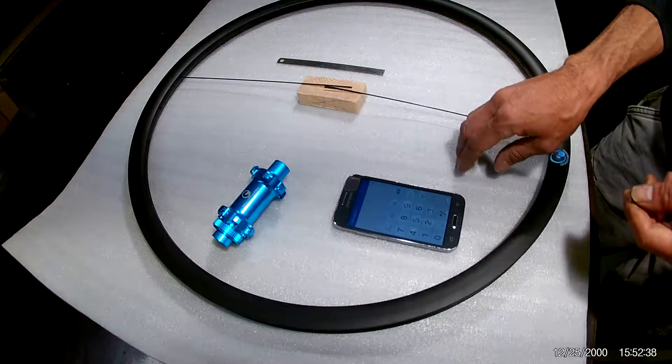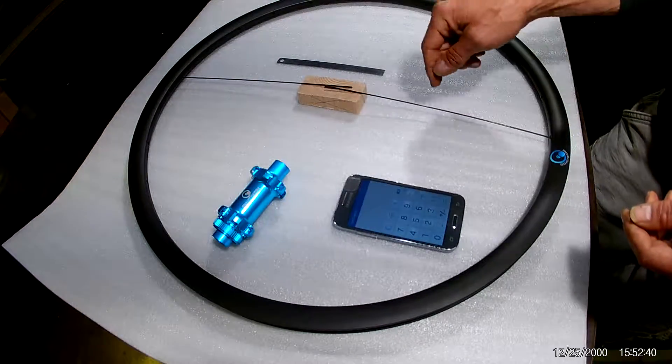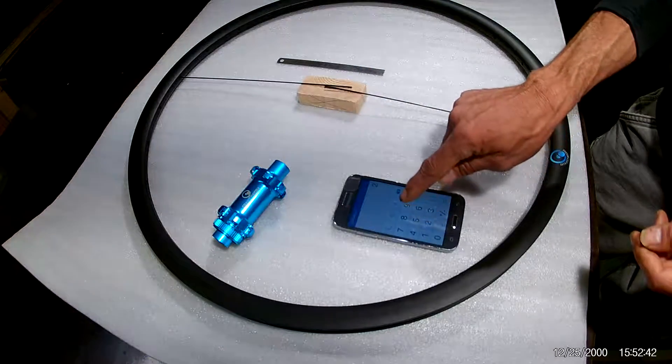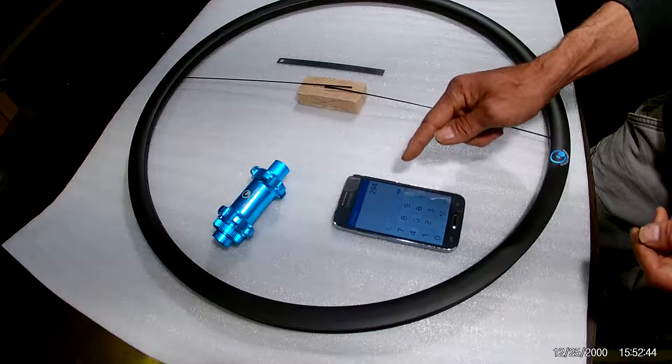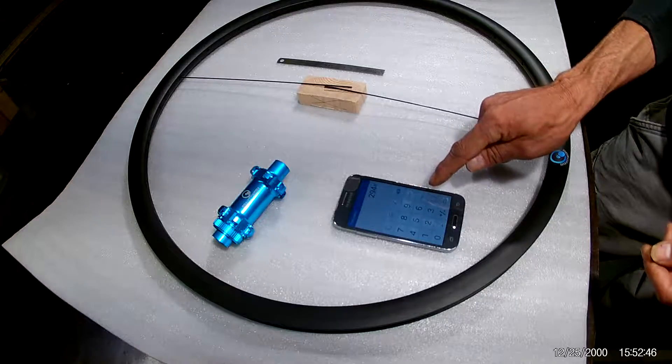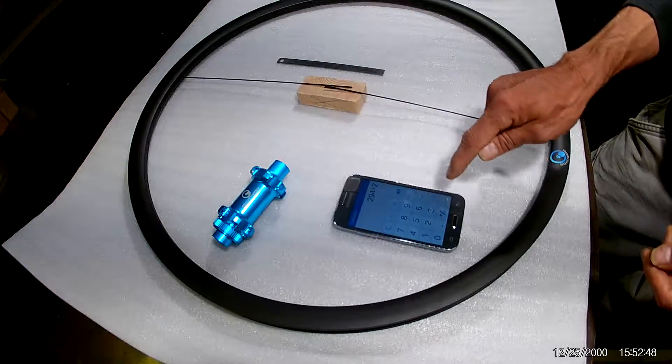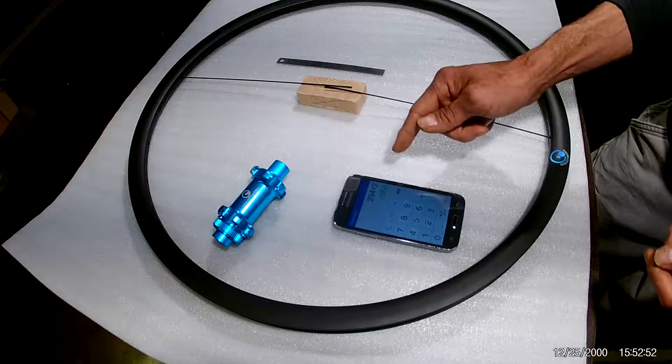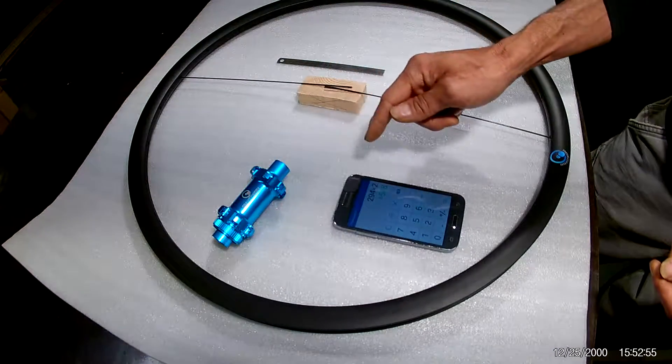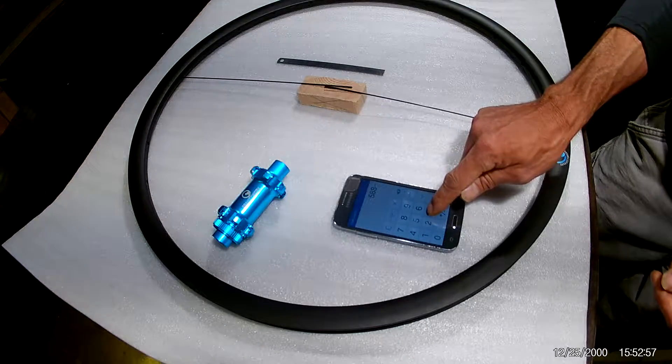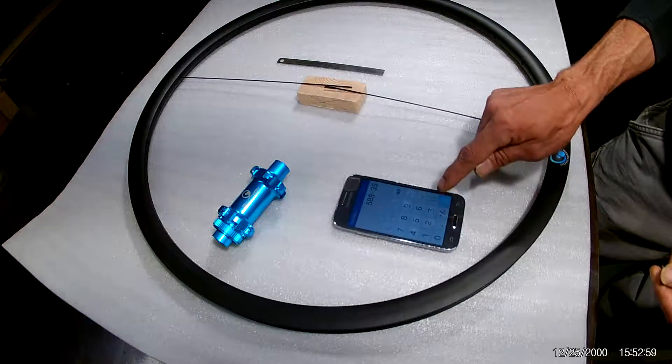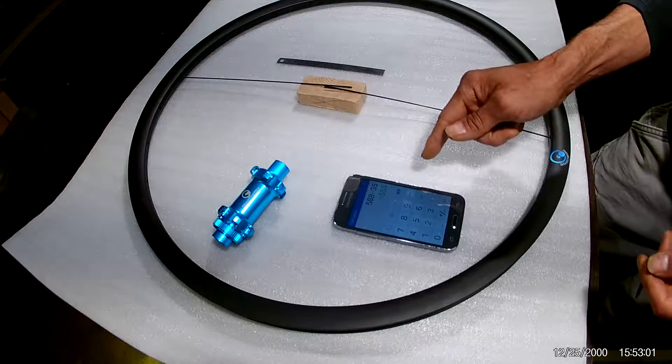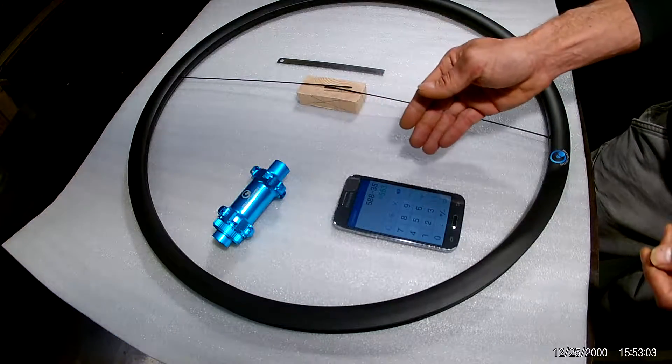Now we're going to go to our calculator and we're going to enter our spoke length, which is 294 millimeters. We're going to multiply that by two because we have two spokes and we get 588 millimeters. Now we're going to subtract the overlap, which is 35 millimeters, and the end result is 553 millimeters.